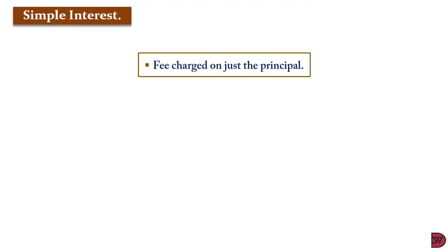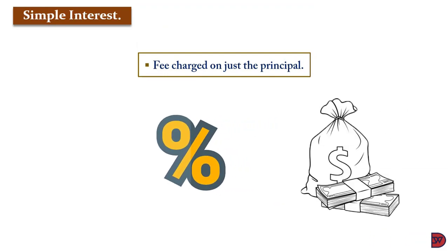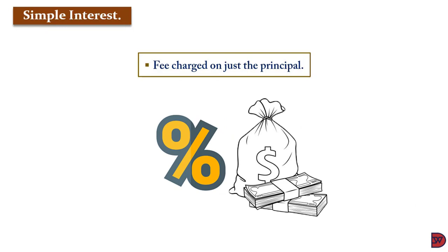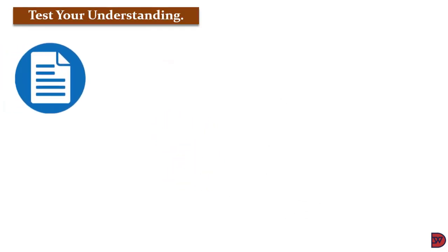With simple interest, the fee is charged on the principal. If Mary gives out $100,000 as a loan and the interest is 10% per month, Mary will be getting $10,000 — that is 10% on the $100,000 — every month, provided she hasn't received any of the $100,000 before the point where the interest is being calculated.